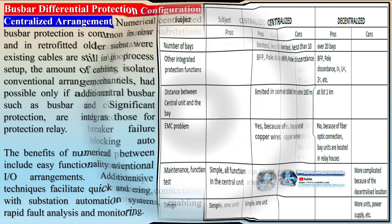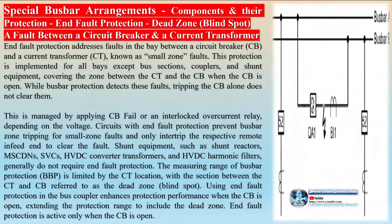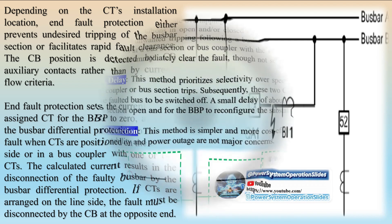The BFP confirms that the circuit breaker has indeed failed to operate by detecting overcurrent through it. The position of the circuit breaker — open or closed — is also monitored to confirm whether a fault condition exists. If the initial trip cannot clear the fault, the BFP can initiate a re-trip of the circuit breaker after a short time delay, typically less than 100 milliseconds. If this re-trip is also unsuccessful, a second stage of the BFP will trip all circuit breakers connected to the same busbar section. BFP schemes can also be combined with other protection functions, such as distance protection, to ensure alternative measures provide protection if BFP is unavailable.